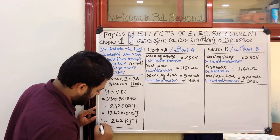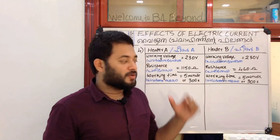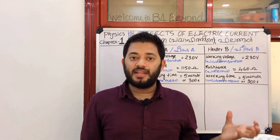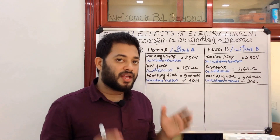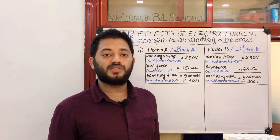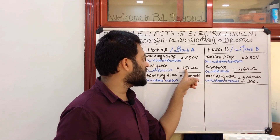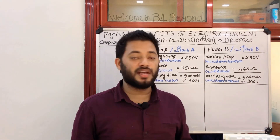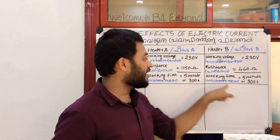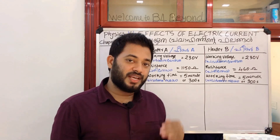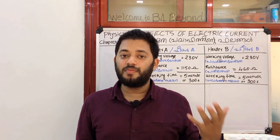The resistance is equal to 460 ohms. Voltage is done, time is done. What about the development of heat? We will approach this problem. The given data has voltage, resistance, and time.